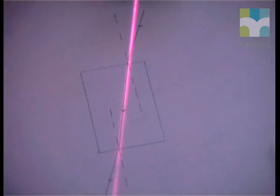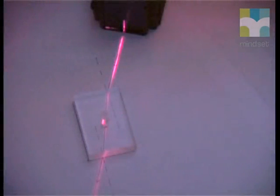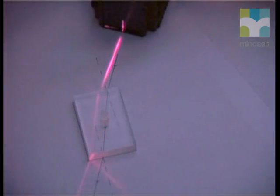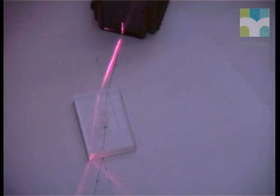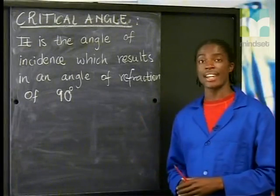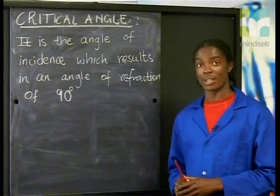I'll adjust the angle at which the light strikes the second boundary. Watch the second refracted ray carefully — you can see that the second angle of refraction keeps getting bigger and bigger as we change the angle of incidence. Now I'm going to adjust the angle of incidence until the second refracted ray runs parallel to the side of the block. The angle of incidence at this point is a special angle which we call the critical angle. For any substance, the critical angle is the angle of incidence which results in an angle of refraction of 90 degrees.